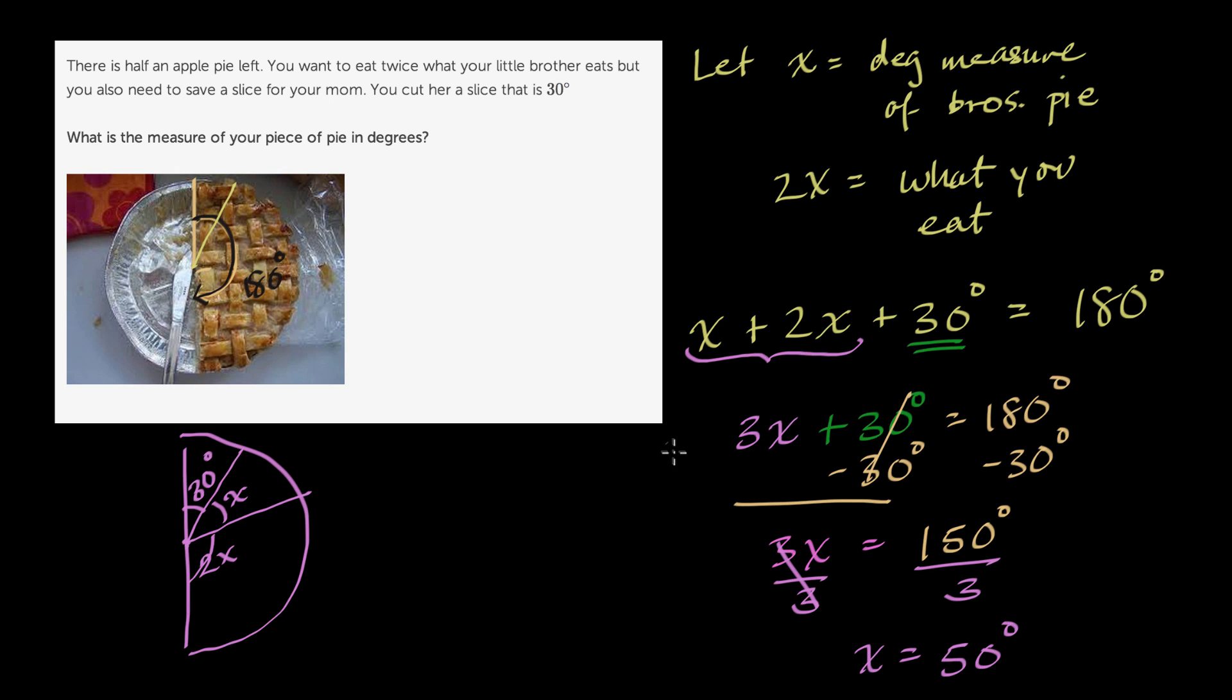Now, we have to be careful. x is not what they're asking for. They're asking for the measure of your piece of pie in degrees. x is the degree measure of your brother's piece of pie. What you eat is two times that. So if x is 50 degrees, two times that is going to be 100 degrees. So what is the measure of your piece of the pie in degrees? It is going to be 100 degrees.